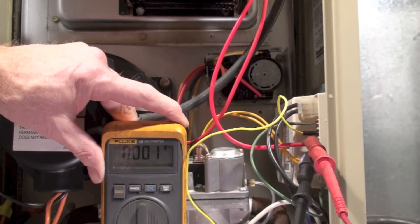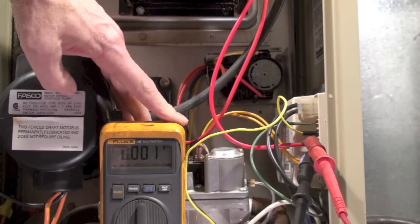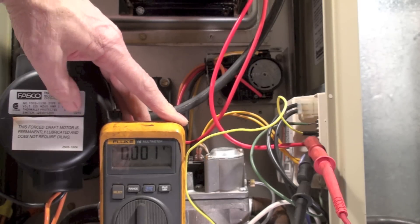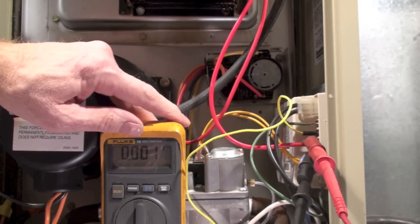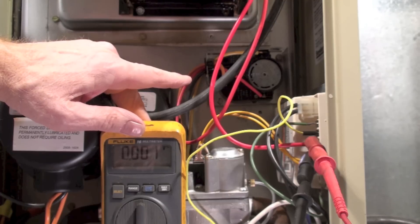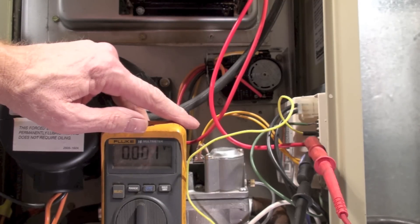things in the way here: one is a centrifugal switch on the blower up above, there's a pressure switch, and there is the limit switch here. Let's see if we can figure out which one of these is open.